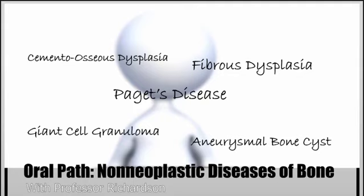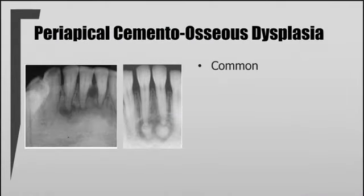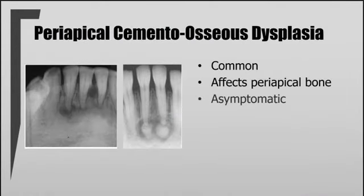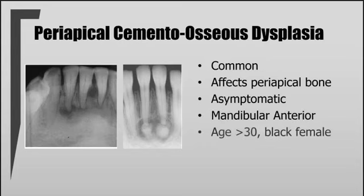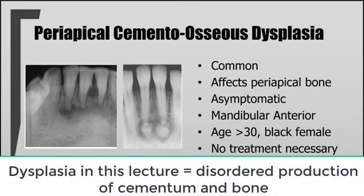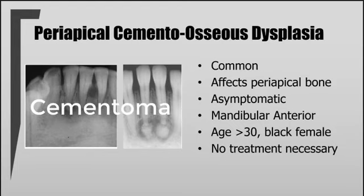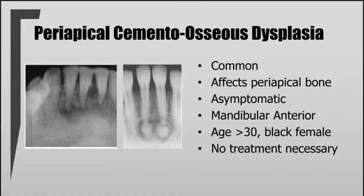Our first lesion in this category is periapical cementoosseous dysplasia. In regard to this lecture, when we discuss dysplasia we're referring to an abnormal and disordered production of cementum and bone — not neoplasia. Some people may refer to these lesions as cementomas, but that's really not the correct terminology. A cementoma is a neoplastic condition, so we should avoid using that term in reference to periapical cementoosseous dysplasia.